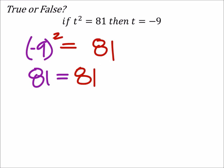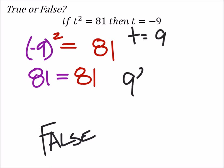In this case, it's not the only solution, which makes this false, right? Because t also equals a positive 9. If we made this 9 squared, we'd get 81.